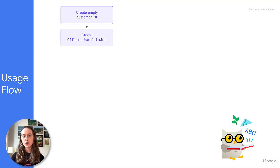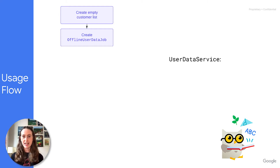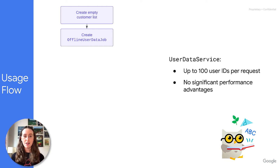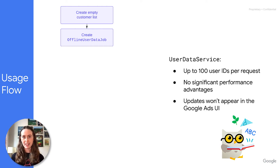Next, create an offline user data job through the Offline User Data Job Service. It's possible to use the User Data Service to add to your Customer Match user lists, but this is designed only for small updates of up to 100 user IDs per request, does not offer significant performance advantages, and updates made with this service won't appear in the Google Ads UI.